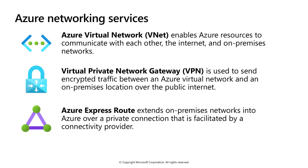The next major category of resource types is Azure Networking Services. Three key services to call out are: Azure Virtual Networks, or VNets, that allow resources to communicate with one another, to the internet, or to your on-premises network; Virtual Private Network Gateway, or VPN Gateway, which is used to send encrypted traffic between an Azure VNet and an on-premises location over the public internet; and Azure ExpressRoute, which extends your on-premises network into Azure over a private connection instead of over the public internet.